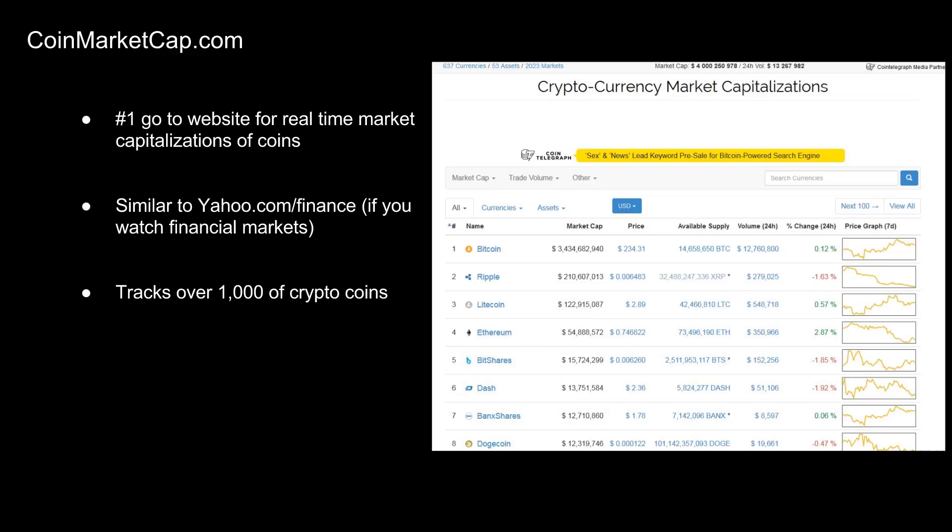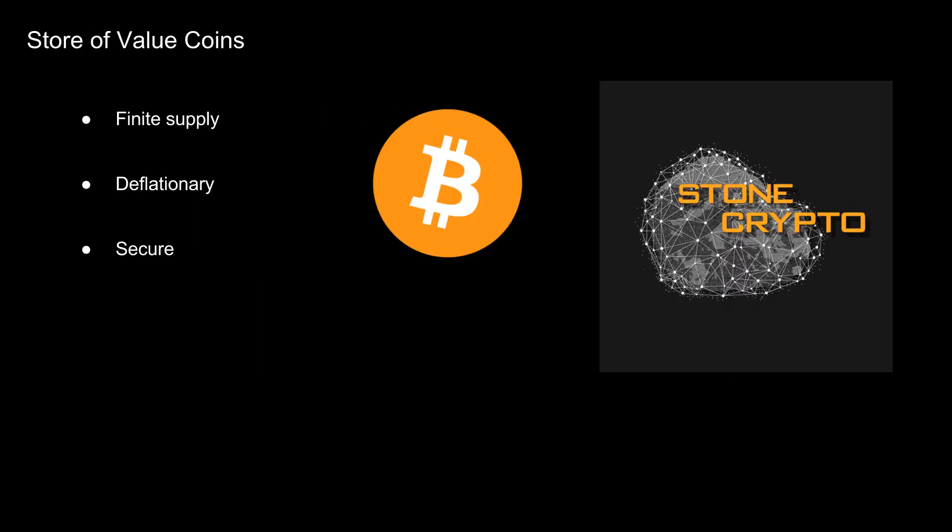Let's get started with the most popular type of coin: Bitcoin, also known as a store of value. Bitcoin is classified as a store of value coin for three main reasons: it's currently the largest coin by market cap, it has a finite supply with a deflationary model, and it has the most secured network infrastructure. Bitcoin will only ever have 21 million coins minted into existence — no more, no less.